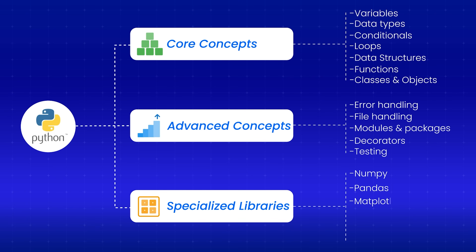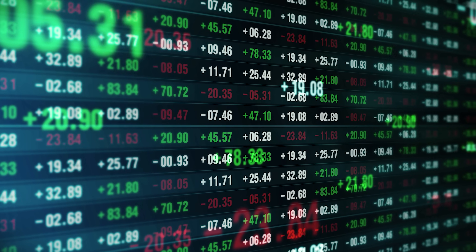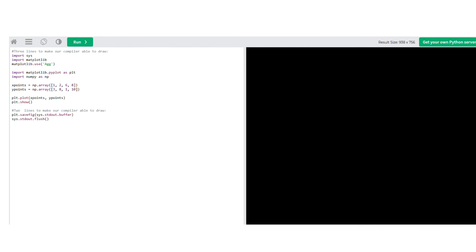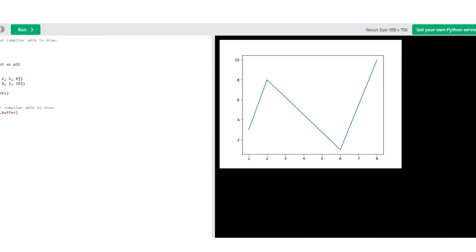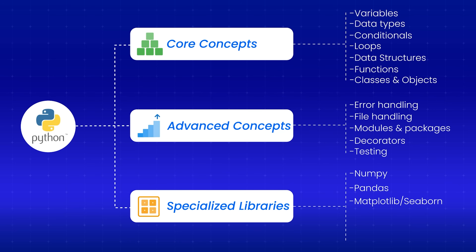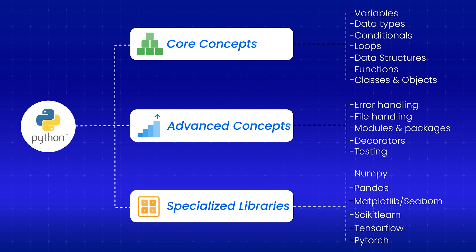The next library is matplotlib or seaborn for visualization. Data without visualizations is just numbers on a screen. Learn how to create basic plots to communicate your findings. If you're interested in machine learning, you will eventually need scikit-learn for traditional ML algorithms and TensorFlow or PyTorch for deep learning. But don't jump into these until you have a solid understanding of NumPy, pandas, and matplotlib or seaborn.